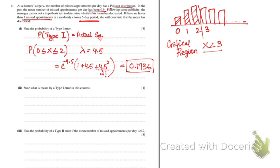The next part asks what is meant by a Type 1 error in this context. In context, a Type 1 error means concluding that the number of missed appointments has decreased — rejecting H0 — when that is actually not true.